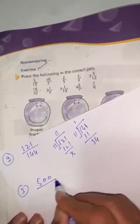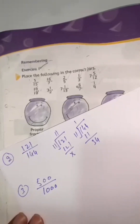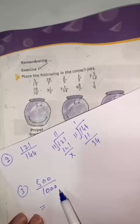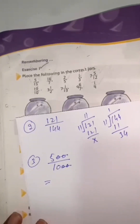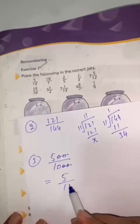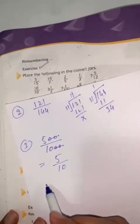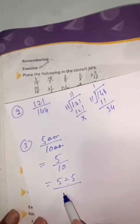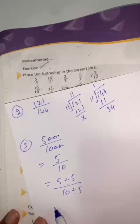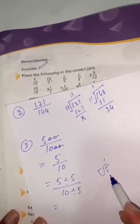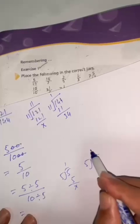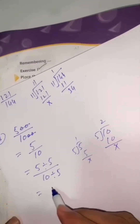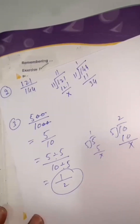Question number 3: 500 divided by 1000. First, cancel the two zeros from both numbers to get 5 divided by 10. Now 5 divided by 5 is 1, and 10 divided by 5 is 2. So the answer is 1 divided by 2.